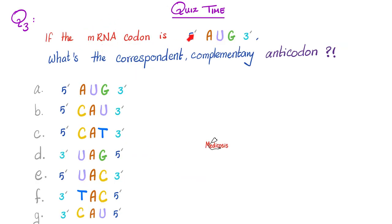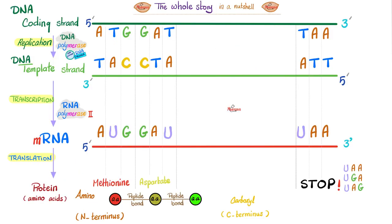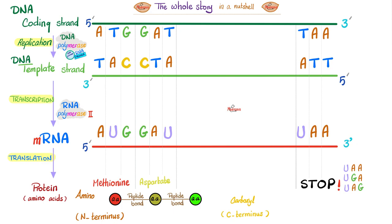Next question. If the mRNA codon is 5' AUG 3', what's the correspondent complementary anti-codon? Please pause and try to answer this yourself. Back to basics. Remember, where is the codon? The codon is on the mRNA. And the question just said that the codon on the mRNA is 5' AUG, and then 3' is towards this side. This is what? Codon. On what? On the mRNA. But where is the anti-codon? It's on the tRNA.